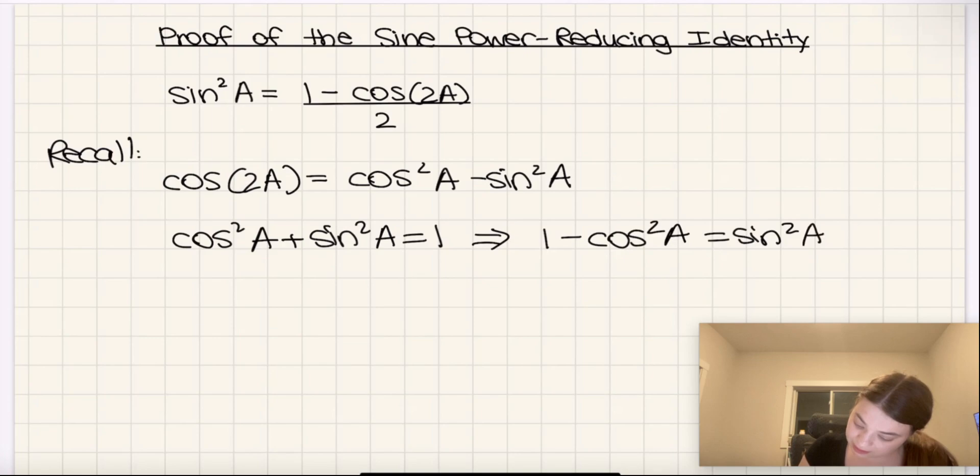and that 1 minus sine squared A equals cos squared A. At the end of the day, we want to take the cosine double angle identity, but express it only in terms of sine squared A. We want the cosine squared A to be gone.